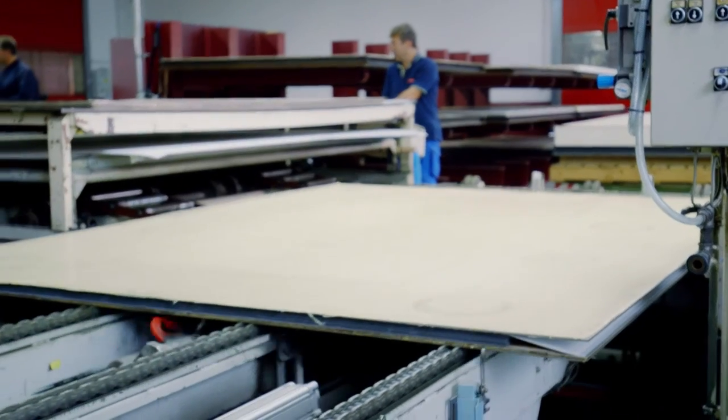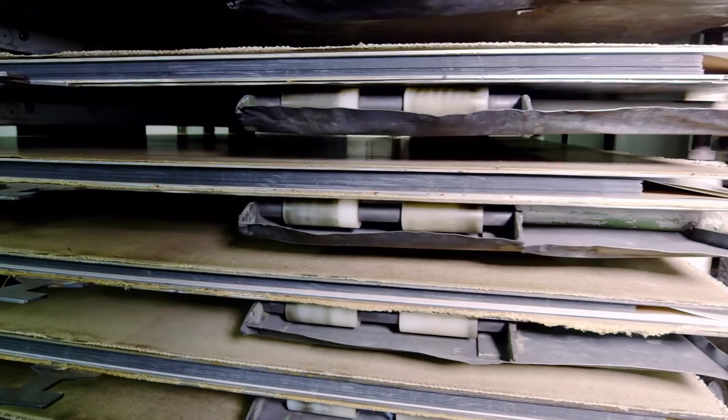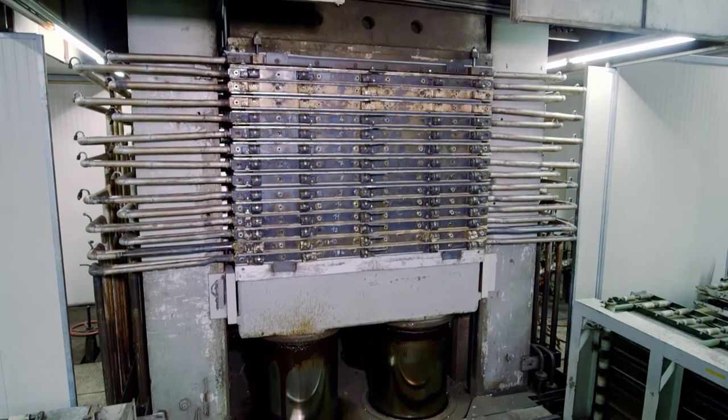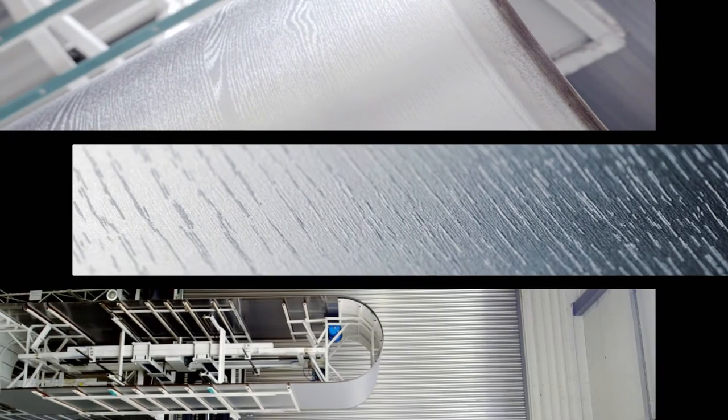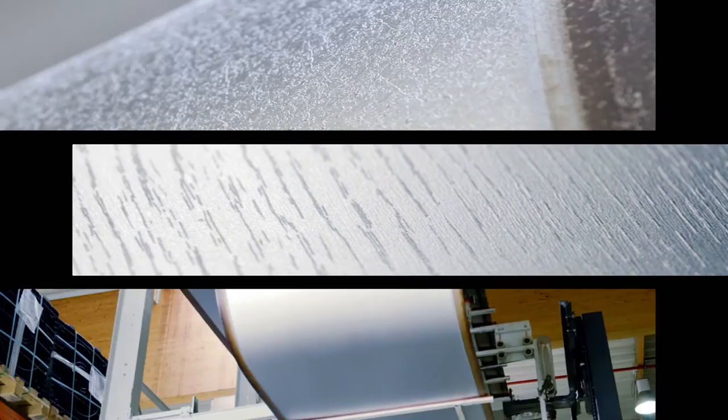At a temperature of more than 120 degrees Celsius and a pressure of over 50 bar, the papers are compressed and left to harden. To create surface textures on the HPL, press plates or press belts are used.